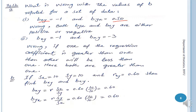The second part of Q14.12: if sx = 10, sy = 10, and r = 0.6, find bxy and byx. Using the formula b = r·(sy/sx), the 10s cancel out and byx = 0.6. Similarly substituting for bxy, the values cancel and bxy = 0.6.